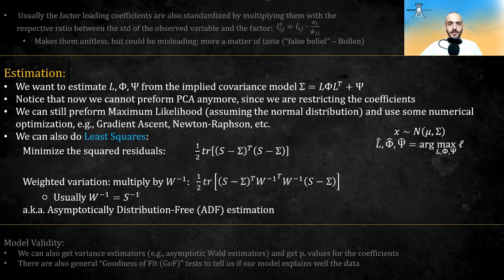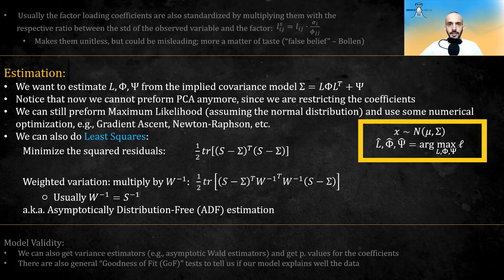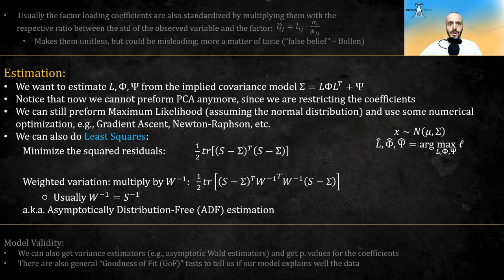For estimations, notice that now we cannot use the principal component analysis, since we are restricting the coefficients. We can still perform maximum likelihood by assuming the normal distribution, and use some numerical optimization, such as gradient descent, Newton-Raphson, etc. We can also do least squares, which is actually similar to min res in EFA. In least squares, what we want is to minimize the squared residuals between the sample covariance and the implied covariance. There's also a weighted variation. These type of estimation techniques are also known as asymptotically distribution-free estimations.